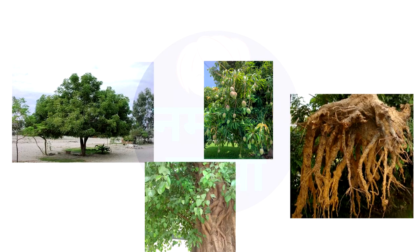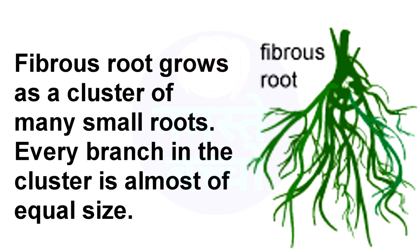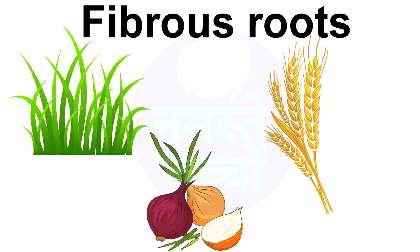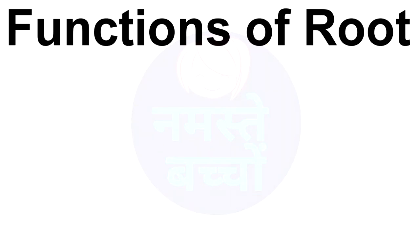Big trees like neem, peepal, and mango have tap roots. Carrot and radish are also tap roots. Fibrous roots grow as a cluster of many small roots. Every branch in the cluster is almost of equal size. Grass, onion, wheat, and rice have fibrous roots.